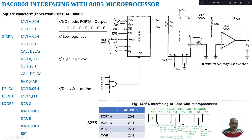The delay function is a subroutine where we initialize two counters: B is initialized to 05h and C is initialized to FFh. First we decrement C and check whether C has reached 0. If not, we continue decrementing C (FE, FD, FC, and so on). Once C reaches 0, we decrement B from 5 to 4, and then run the C counter again from FF to 0. This continues until the subroutine completes, introducing a delay that can be in terms of microseconds or milliseconds, depending on the T-states of each instruction and the oscillator frequency connected to the microprocessor.